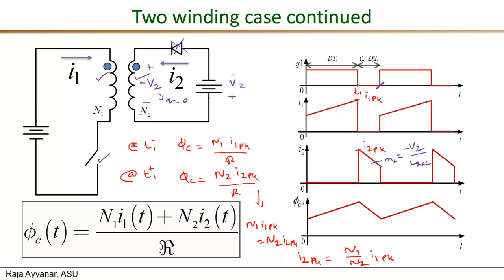When the primary switch turns on, to keep the flux continuous, i1 jumps from zero to its initial value. In steady state, this initial value is the same as the starting value of the previous cycle. The relationship is: i1_low = (N2 / N1) * i2_low, where i1_low and i2_low are the lower values of the respective currents at the switching transitions.